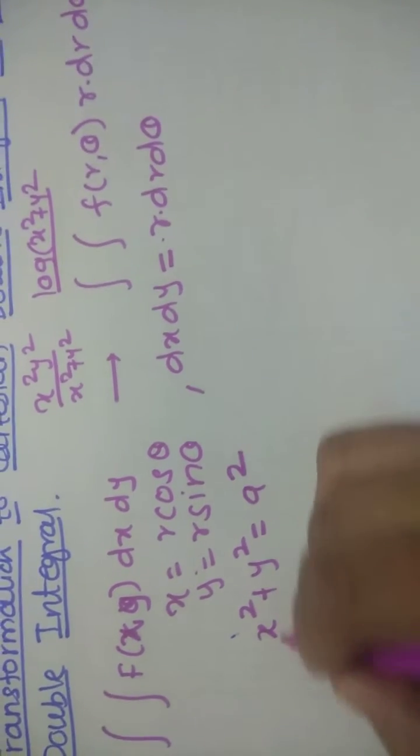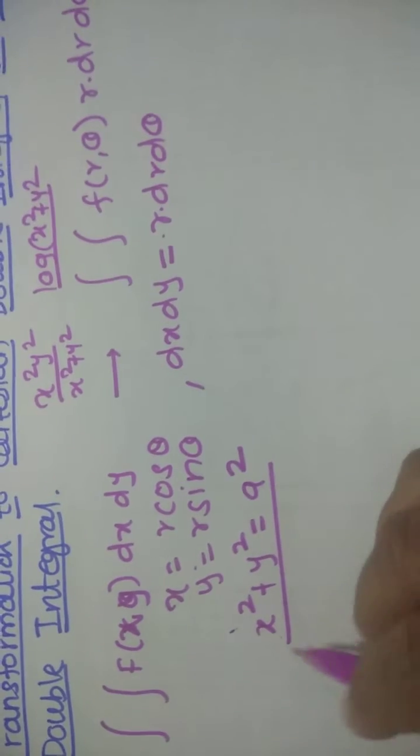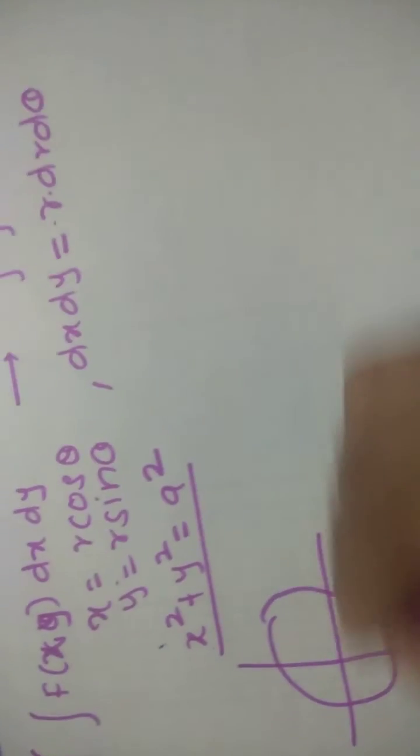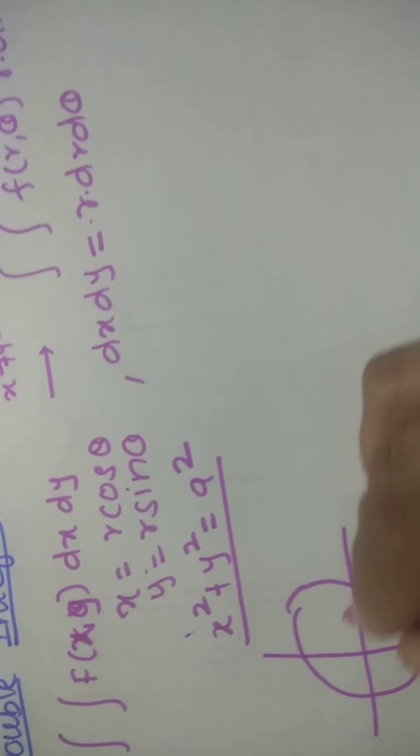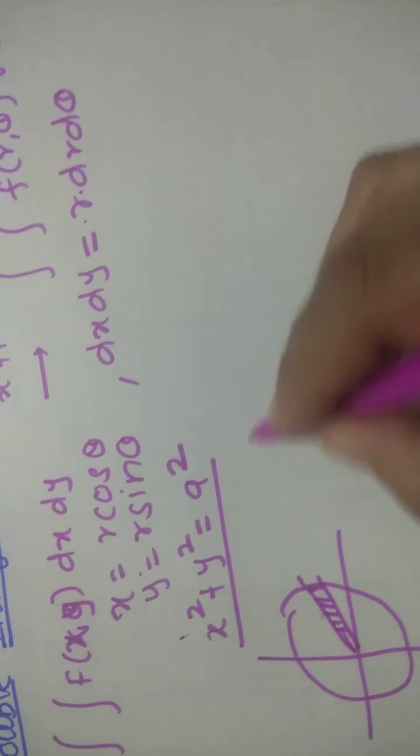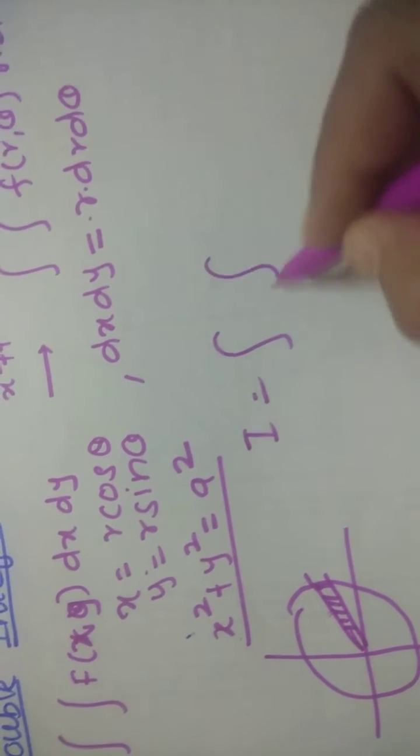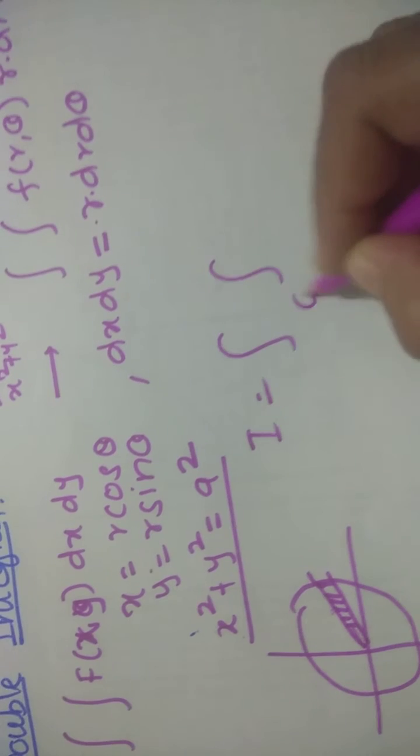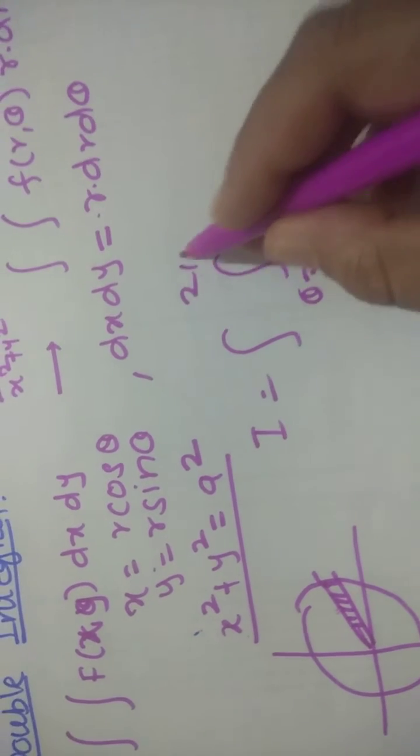For this complete circle, what are the limits in polar coordinate system? This is a complete circle and suppose we have this radial strip. So theta varies - it is a complete circle 0 to 2 pi. So theta is equal to 0 to 2 pi.